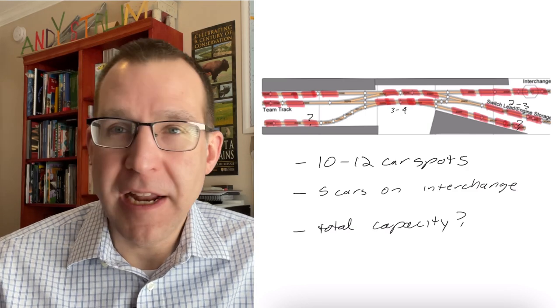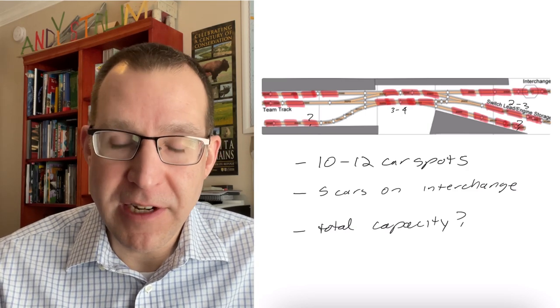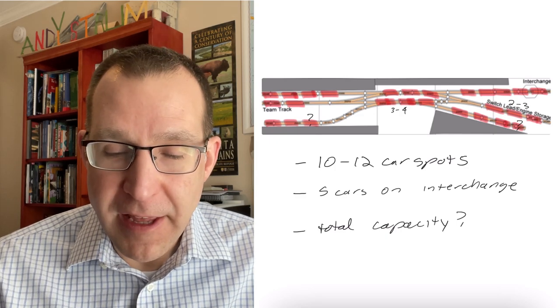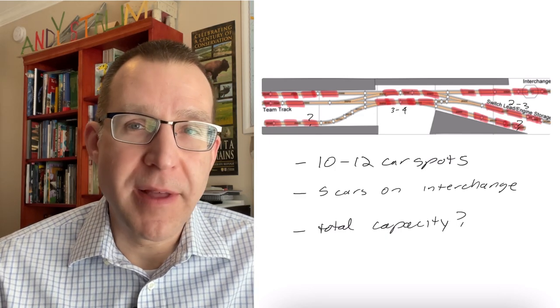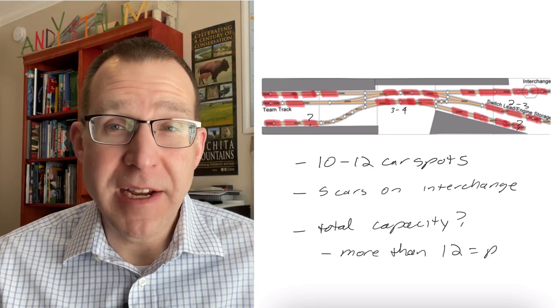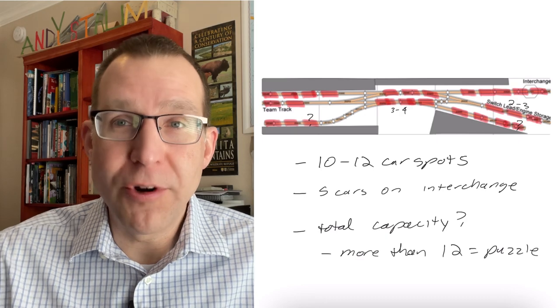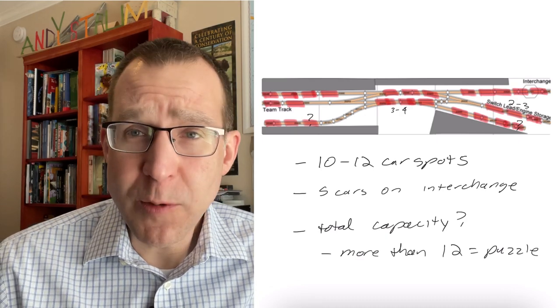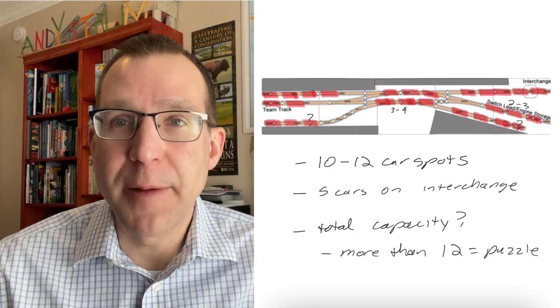And then I can just either take some off or add a couple more if I want to sort of increase or decrease the overall challenge of switching everything. And whether I operate this with a playing card system like I have with other layouts, or do a car card and a waybill kind of system, create a bunch of switch lists that are pre-generated, and I can kind of just pick one and operate that way as well. So we'll see how the operation will be set up here.